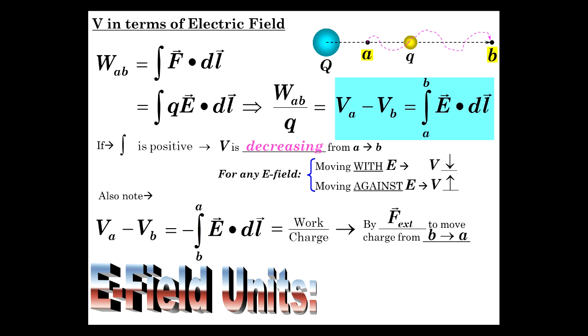The E field units, as we've already known, are newtons per coulomb. But now we see that you take volts and divide it by meters. And so newtons per coulomb is also a volt per meter. So electric field can now be expressed in terms of how many volts divided by the region of space in meters across which that potential difference actually exists.